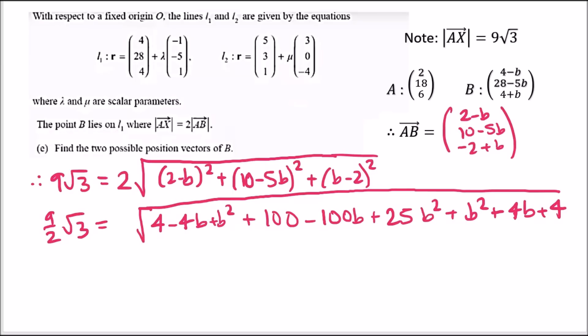Collecting like terms in the root, we've got 27 beta squared minus 4 beta minus 104 gives minus 108 beta. Then 4 plus 104 is 108. Subtracting 243 over 4 from 108 gives 189 over 4, so the equation is 27 beta squared minus 108 beta plus 189 over 4 equals 0.